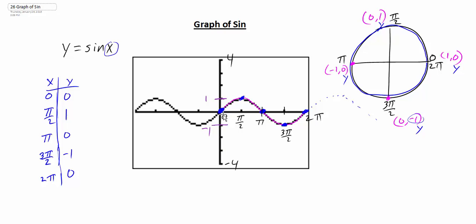Now, realize the domain — the x is our domain. What can we plug in? We can substitute in any real number. Any number here on the x-axis we can substitute in. It's just that we're only going to get out y values between negative one and positive one.